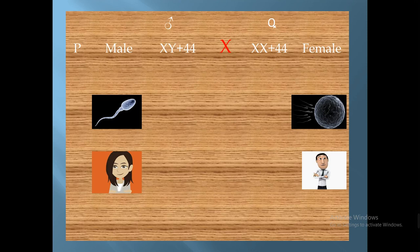Here is a normal marriage between male and female. The normal male karyotype is 44 plus XY, and the normal female karyotype is 44 plus XX.